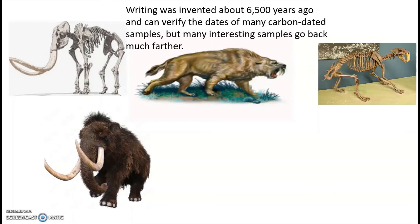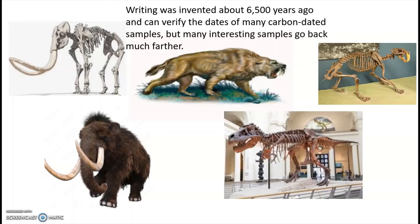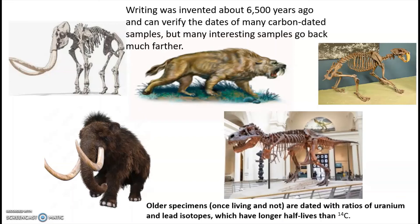Writing was invented about 6,500 years ago, so things go back further than historical times. For instance, the saber-toothed tiger went extinct about 10,000 years ago, while the T-rex went extinct about 65 million years ago. For samples that old, other isotopes with longer half-lives are used — such as ratios of uranium and lead isotopes — but they operate on the same basic principle, and the decay curves look the same.